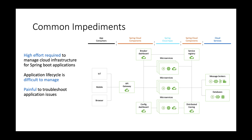Regardless of where you're deploying — virtual machines, containers, on-prem or cloud, any cloud — Azure, Amazon, Google, Alibaba — you are on point for building a dynamically scaling infrastructure to deploy all of these. It's a high effort.